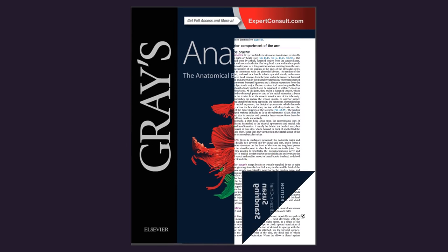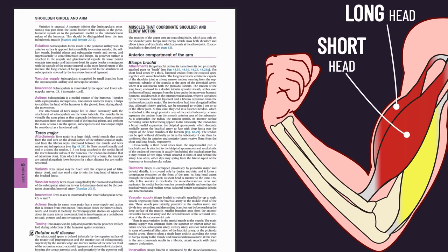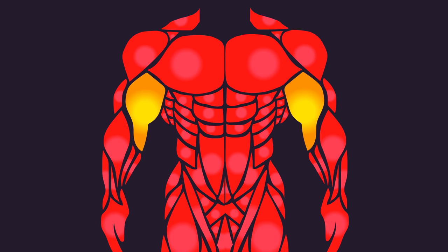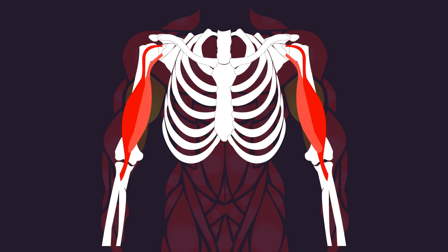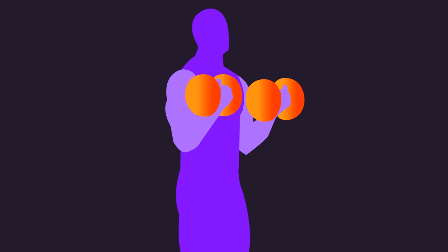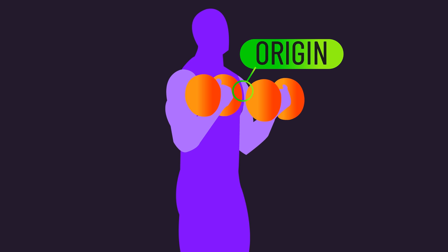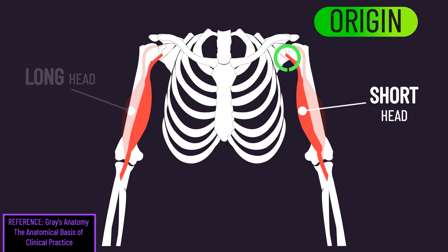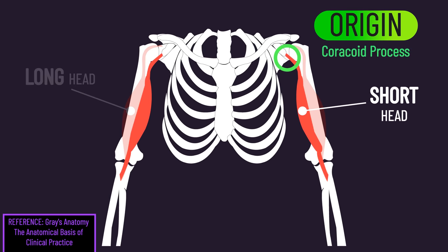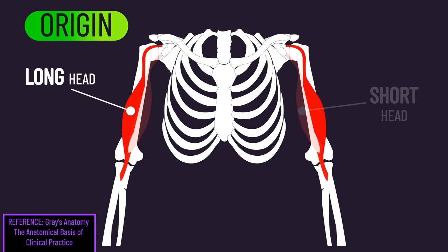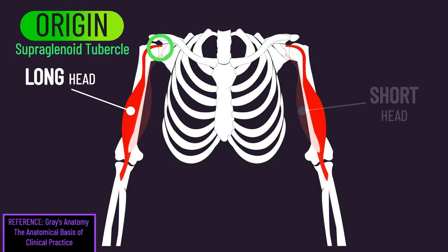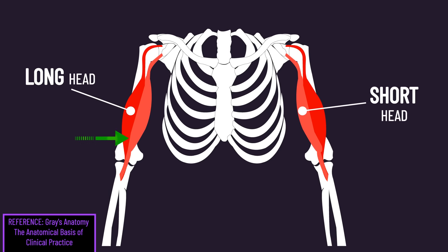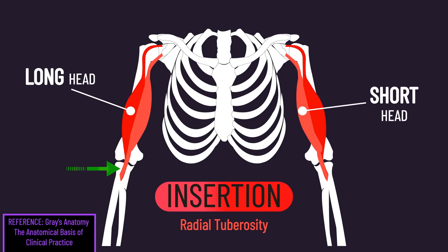Anatomical textbooks tell us the biceps consist of a long and short head. Like every single muscle in the body, the biceps create movement thanks to being attached to bones. The attachments on the bone that do not move are termed the origin, whereas the attachments that move are called the insertion. The short head originates from the coracoid process, whereas the long head originates from the supraglenoid tubercle. The long and short head merge together to form a single muscle mass and insert on the radius.